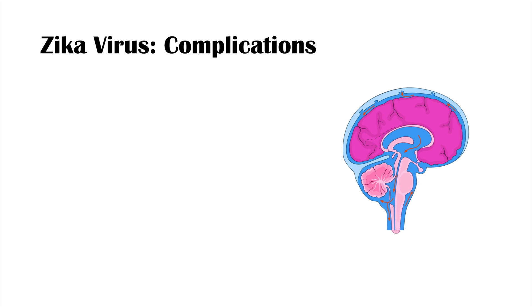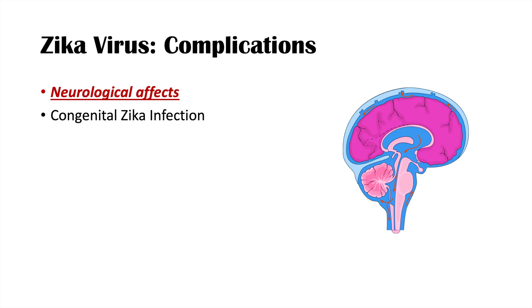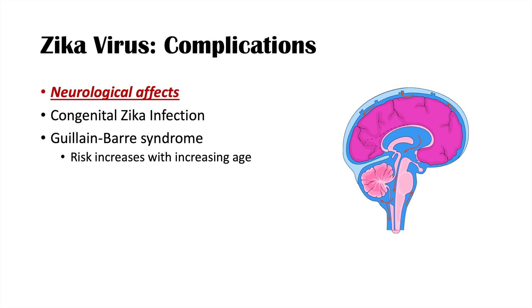The major complications of Zika virus are congenital Zika infection and Guillain-Barré syndrome. Guillain-Barré syndrome is a neurological condition characterized by ascending paralysis, typically starting in the lower extremities or hands and ascending toward the trunk. The concern is that if paralysis reaches the diaphragm, the patient may stop breathing. The risk for Guillain-Barré syndrome increases with age and is more common in male patients.